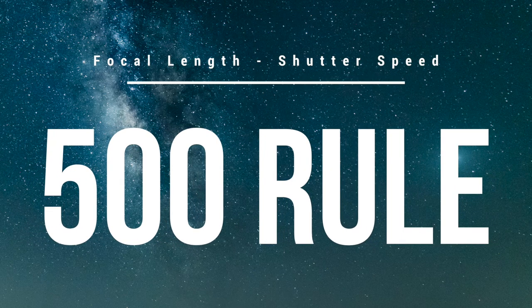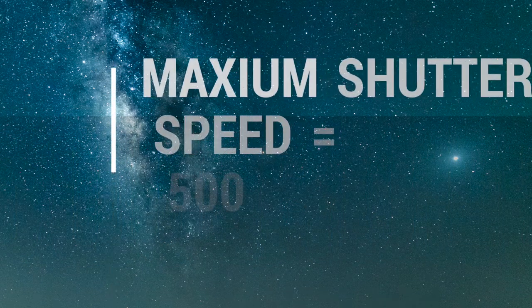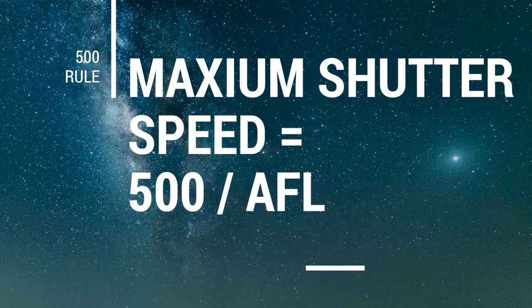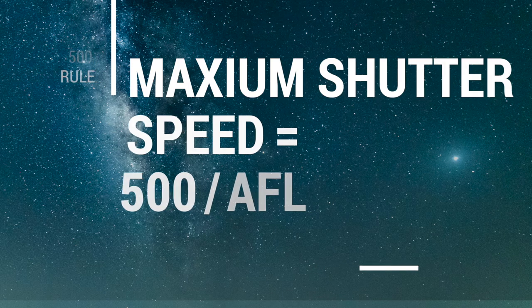Now let's talk about focal length. Always use the widest focal length you have. In astrophotography, focal length is related to shutter speed — the shutter speed will be dependent on the focal length. That brings me to the 500 rule. The 500 rule states that the maximum shutter speed you can use to get stars pinpoint sharp and avoid star trails is 500 divided by your actual focal length.